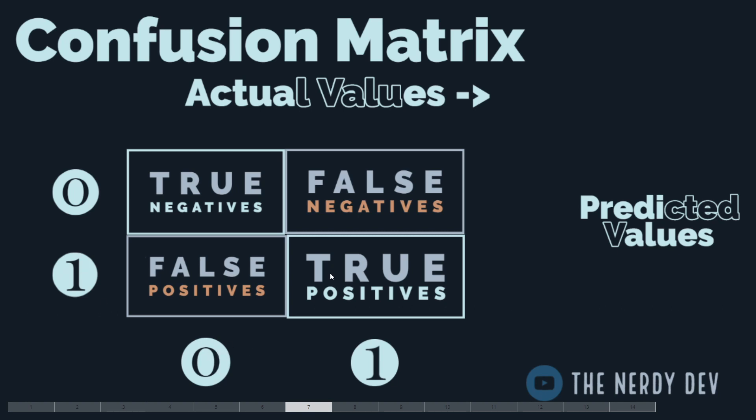The last cell represents True Positives: the actual value was 1 (a positive class) and the model correctly predicted it to be 1, hence the term true positive.